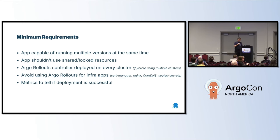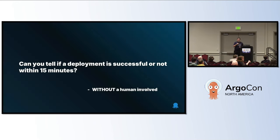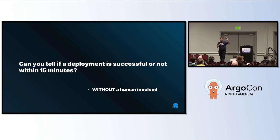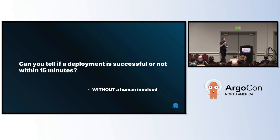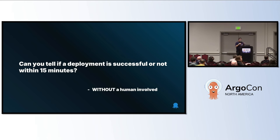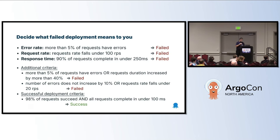The big question is whether you have your metrics. You need to have metrics that tell you in 15 minutes — not two hours, not two weeks, not two days — if a deployment is successful or not, and without a human. Not George sitting at his desk saying yes it's okay. It's Argo Rollouts that says this. This is the most basic requirement you need to have in place in order to adopt Argo Rollouts.